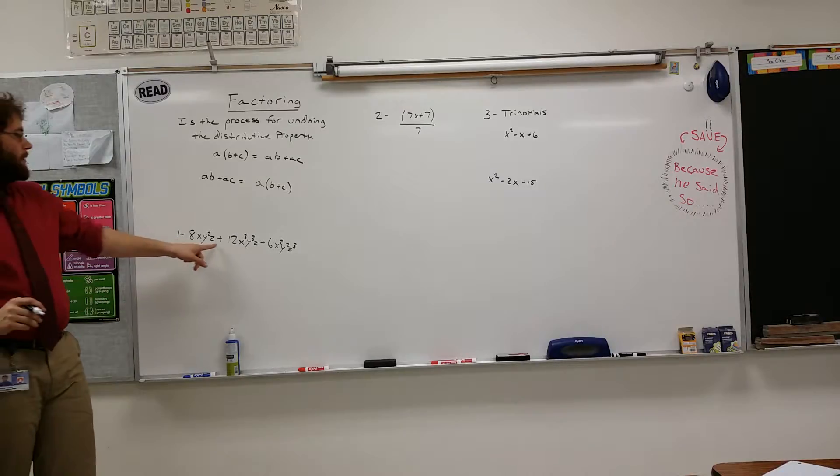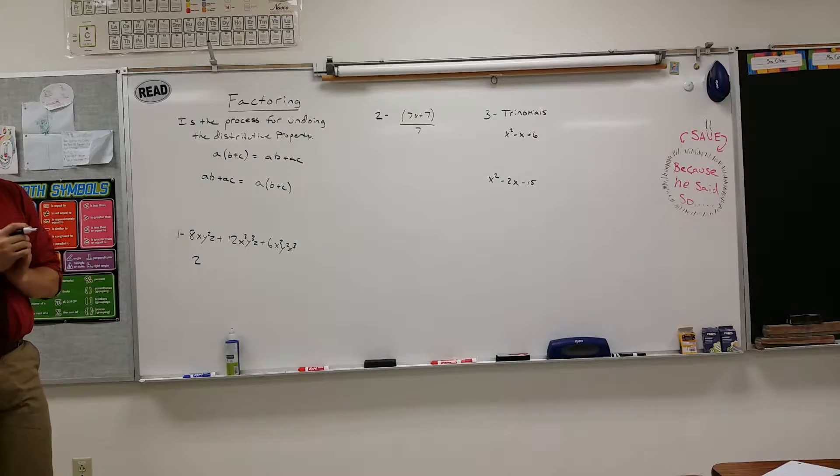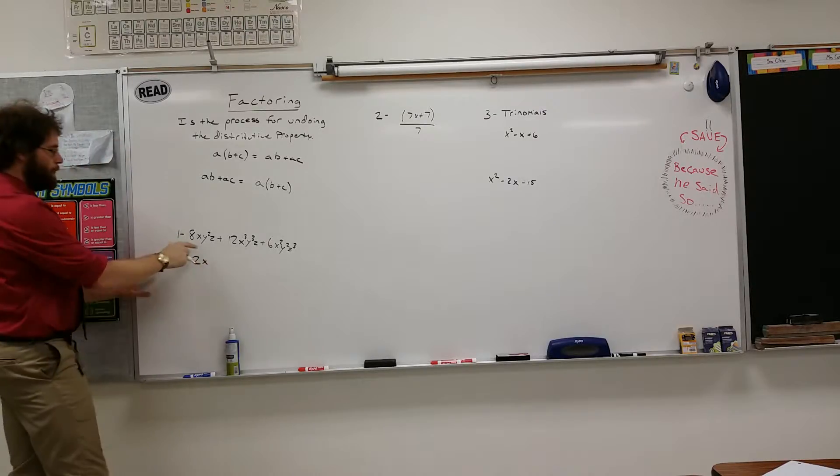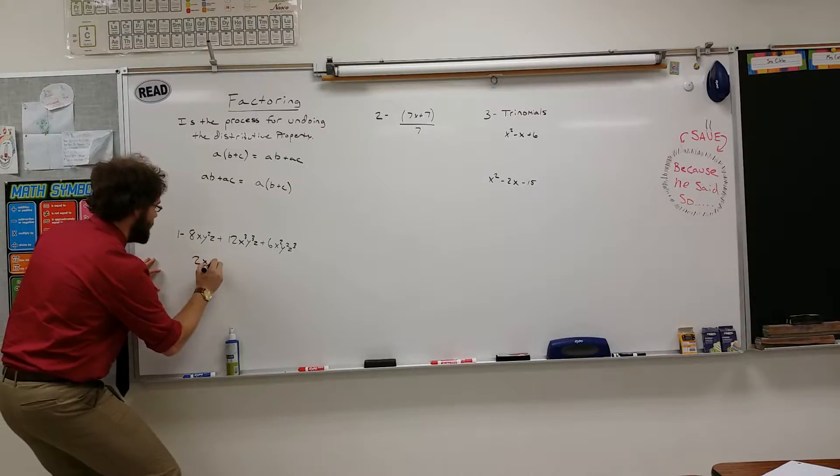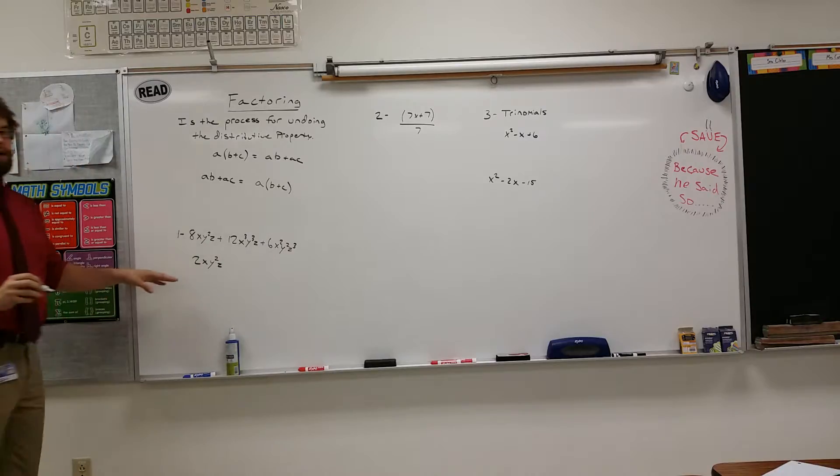If you go through the exponents, you're going to find the lowest numbered exponent for each letter. So in this case, X would be 1. For Y, you'd get 2, so Y squared. And then for Z, you'd also get 1. So that's our common factor.